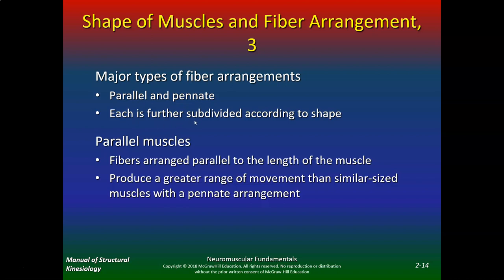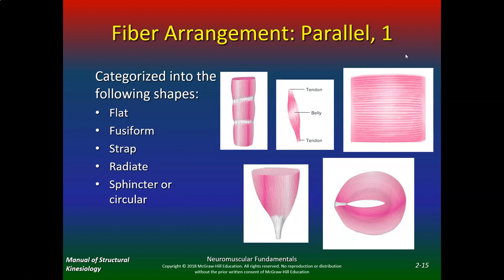The major types of fiber arrangement are either parallel or pennate. Each is further divided according to their shape. Parallel muscles have fibers arranged parallel to the length of the muscle and produce a greater range of movement than similar-size muscles with a pennate arrangement. The parallel muscles are either flat, fusiform, strap, radiate, sphincter, or circular.